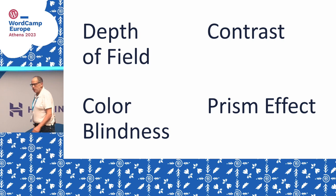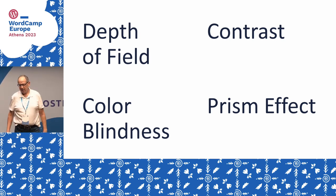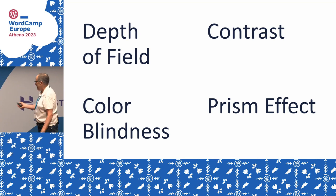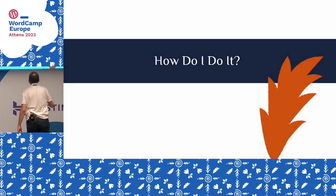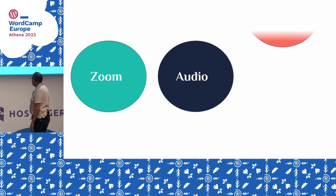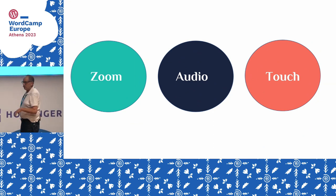I also have what I call the prism effect — I have two eyes that don't function together, which results in a split of my vision. Instead of normal vision where the two eyes function as one, I have two separate visions going on. How do I do all this? There are really three things I do: I use zoom, I use audio, and then touch — these are all three very important factors in my life. Touch, in terms of using a mouse, means I know how far I can move something — I call that touch.